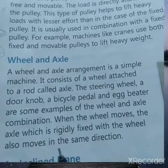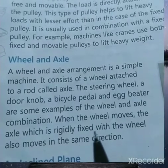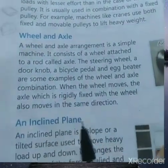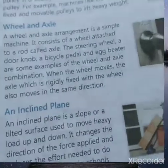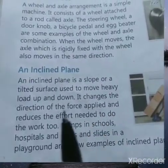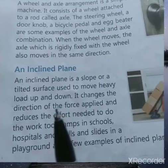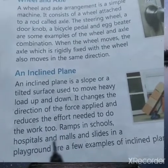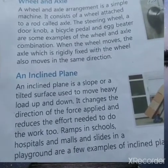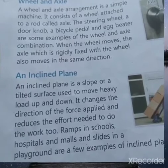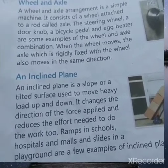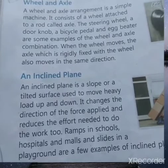When the wheel moves, the axle — which is rigidly fixed with the wheel — also moves in the same direction. An inclined plane is a slope or a tilted surface used to move heavy loads up and down. It changes the direction of the force applied and reduces the effort needed to do the work.